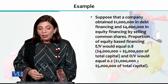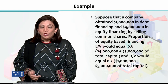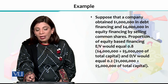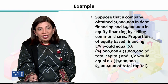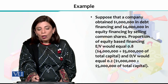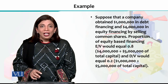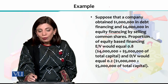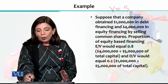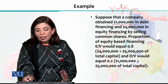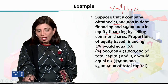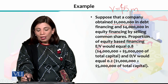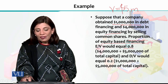I am going to explain this with an example. Suppose there is a company which has 1 million dollars debt financing and 4 million dollars equity financing. This means V, the total, is 1 million plus 4 million equals 5 million dollars total financing. So we have 1 million dollars debt and 4 million dollars equity. The proportion of equity-based financing, meaning E divided by V, will be 4 divided by 5, which equals 0.8.